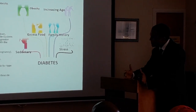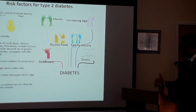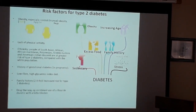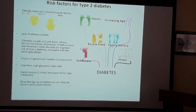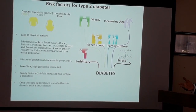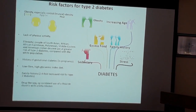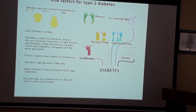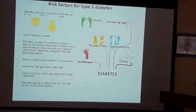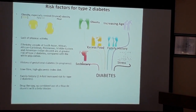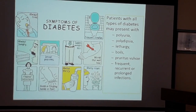Some medications can also tip you into becoming diabetic, including diuretics, beta blockers, and steroids. Steroids in particular are well known to increase the chance of developing diabetes.